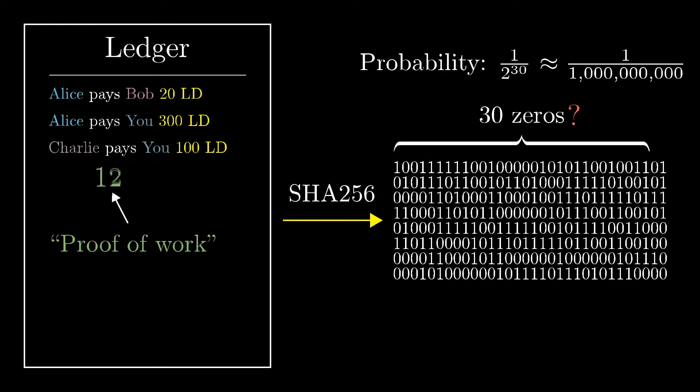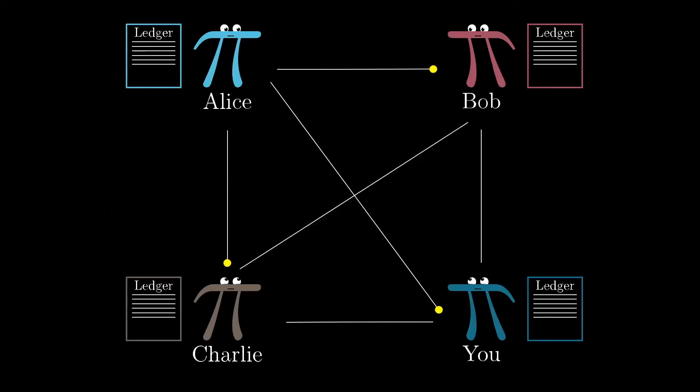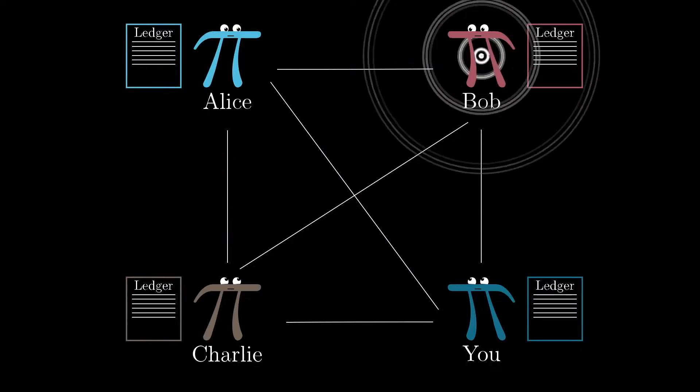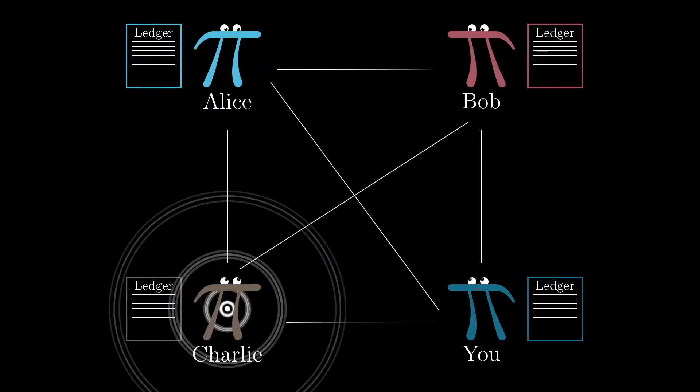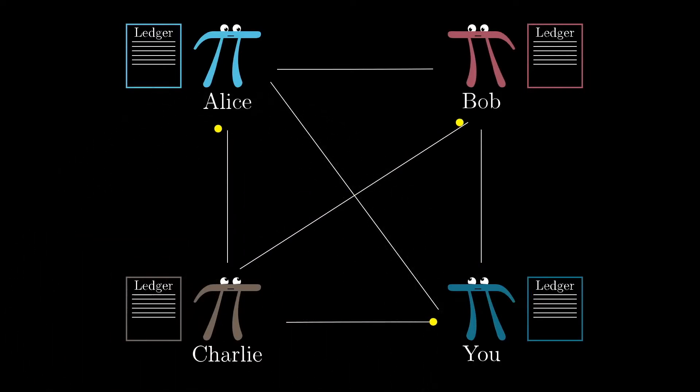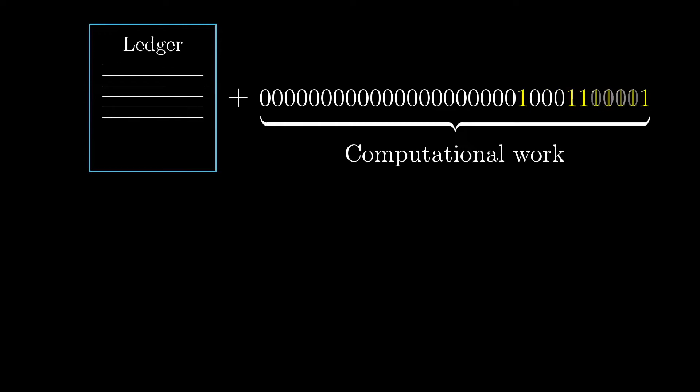So now think back to our distributed ledger situation. Everyone is there broadcasting transactions, and we want a way for them to agree on what the correct ledger is. As I said, the core idea behind the original Bitcoin paper is to have everyone trust whichever ledger has the most work put into it.